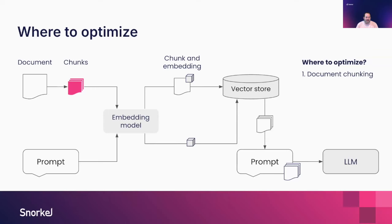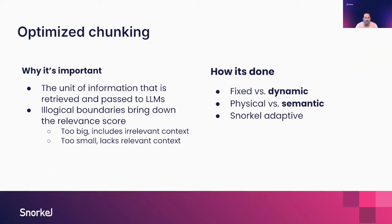Starting with chunking optimization — it's not the documents that are passed to the LLM as context, it's chunks, smaller pieces of those documents. These are the units of information we're indexing, retrieving, and passing to the model. The challenge is that incorrect or illogical boundaries impact the embeddings and the scores. If chunks are too big, they include irrelevant context and the relevance score comes down. If they're too small, they lack relevant context, and the score also comes down.